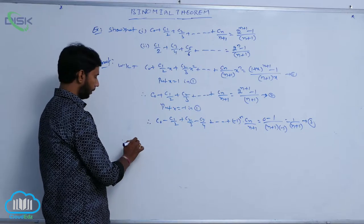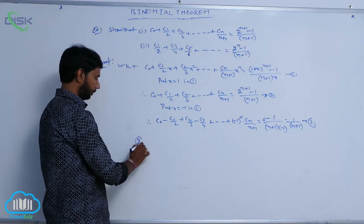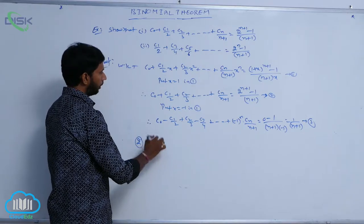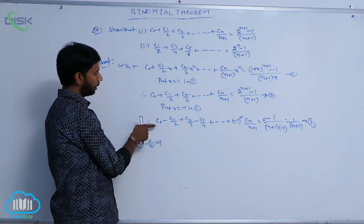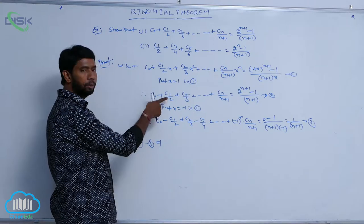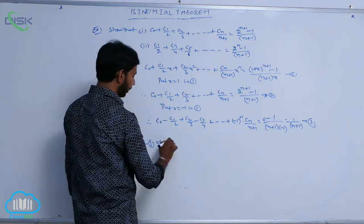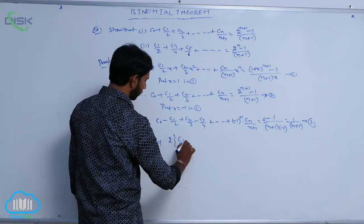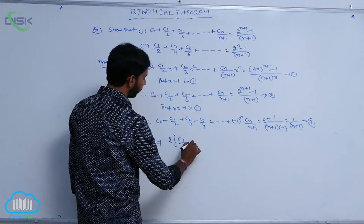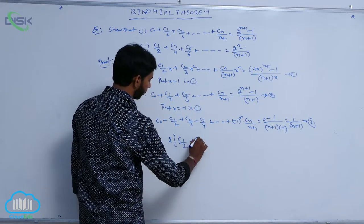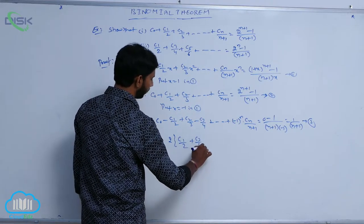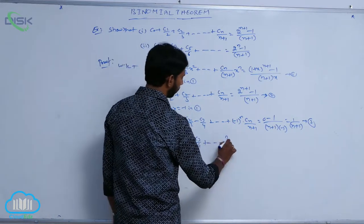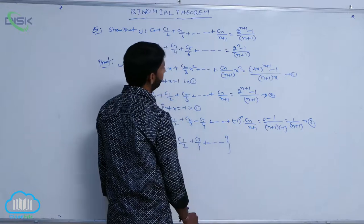Computing (condition 2) - (condition 3): C₀ gets cancelled. C₁/2 + C₁/2 gives 2 times C₁/2, and C₃/4 terms add up, so we get 2·(C₁/2 + C₃/4 + ...) on the left side.